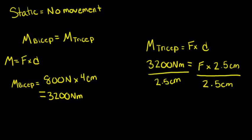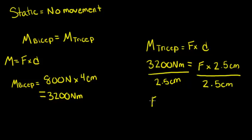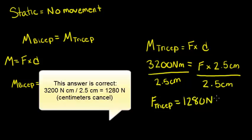Plug this into our calculator. We find that the force from the tricep equals 1,280 newtons. This is Example 7.3.